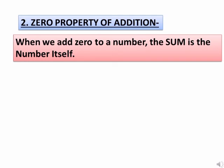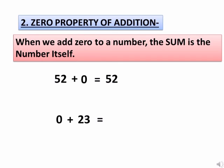Let us take the number 52. When we add 0 to 52, the sum is 52 itself. Let us take another example. Here, the number is 23. When 0 is added to 23, again the sum is 23 itself.